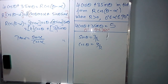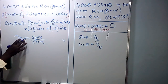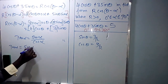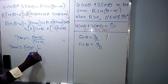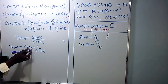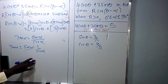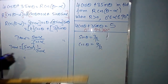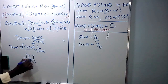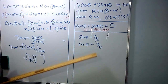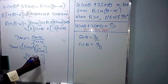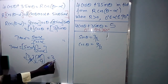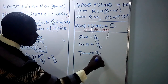Sin alpha over cos alpha gives us tan alpha. Sin alpha over cos alpha is the same as sin alpha times 1 over cos alpha. Substituting: sin alpha is 3 over R, times 1 over cos alpha. If cos alpha is 4 over R, then the reciprocal of cos alpha, which is 1 over cos alpha, is R over 4. So R cancels with R, and we remain with 3 over 4. So tan alpha equals 3 over 4.